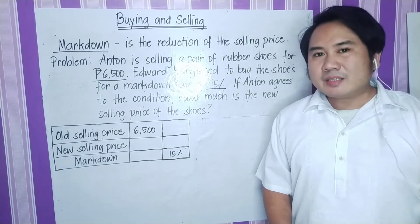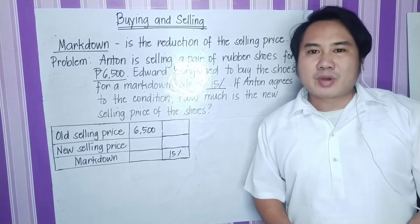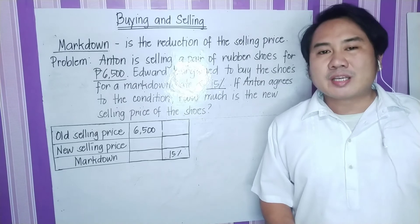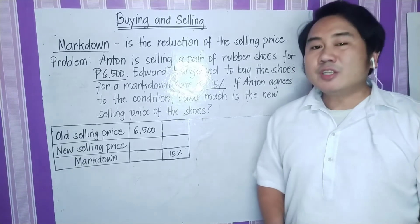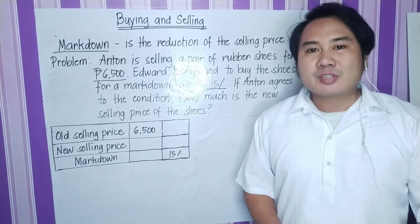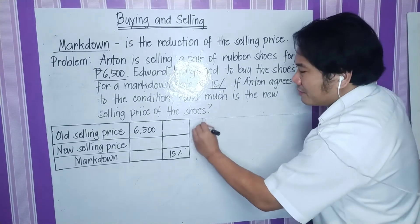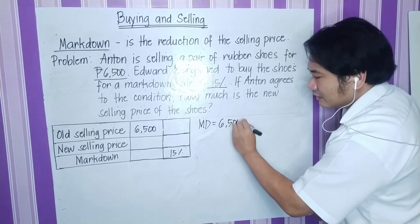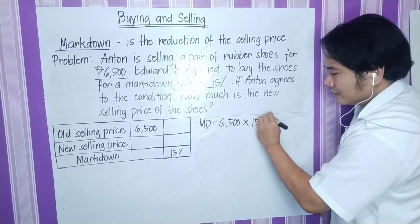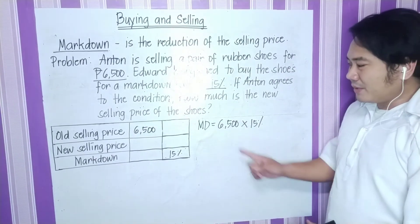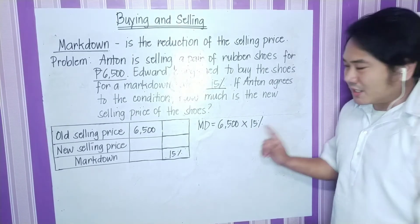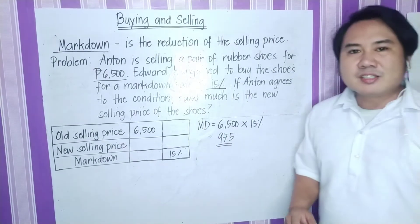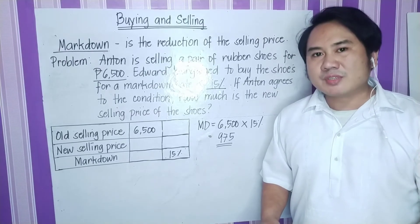If that is the markdown rate, the question is how much is the new selling price of the shoes? First, we have to determine how much is the markdown from the original price of P6,500 pesos — that is, we need to find 15% of P6,500. To solve for the markdown: multiplying P6,500 by 15% gives us P975 pesos. This is the markdown — the 15% markdown from P6,500 pesos.